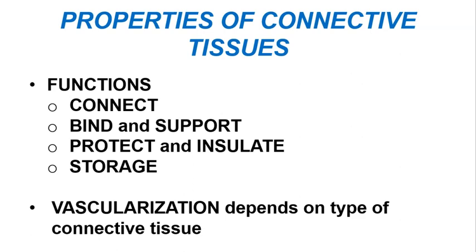In connective tissues, we see that there is a wide range of vascularization. Some connective tissues, such as the bones and the fibrous connective tissues, tend to be very well vascularized and have lots of little capillaries and blood vessels. On the other hand, things like the cartilages are avascular, so they lack blood vessels entirely.